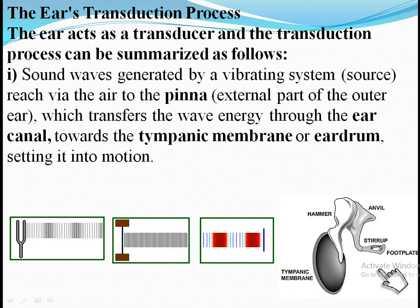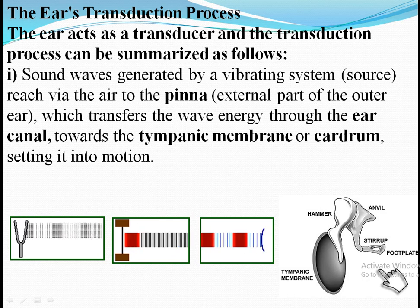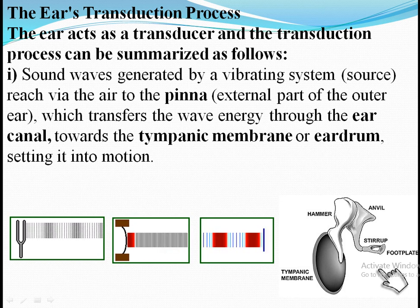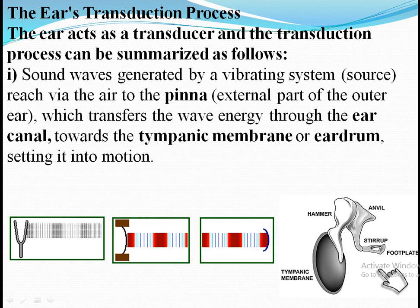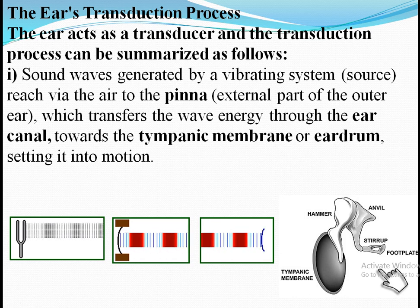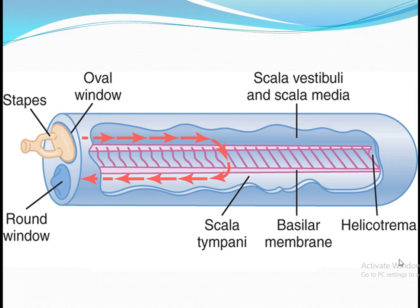The ear acts as a transducer. The transduction process can be summarized as follows: sound waves generated by a vibrating system reach the pinna, which is the external part of the ear. The pinna transfers wave energy through the ear canal towards the tympanic membrane or eardrum, setting it into motion. From there the waves are conducted via the three ossicles of the middle ear cavity to the internal ear.